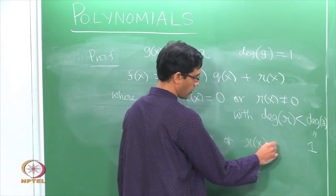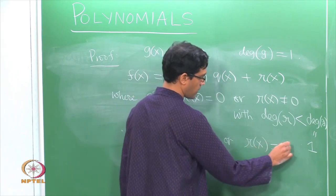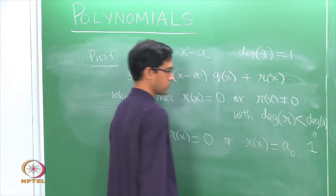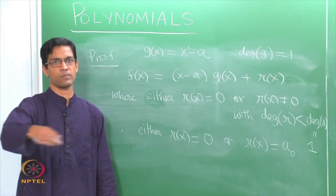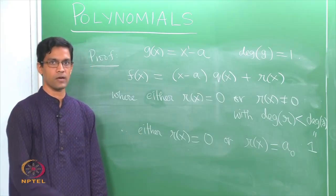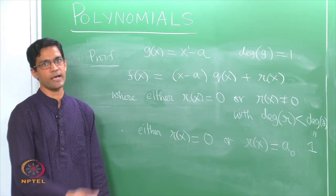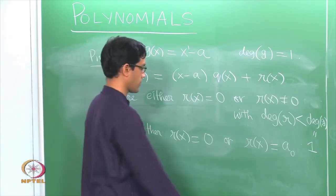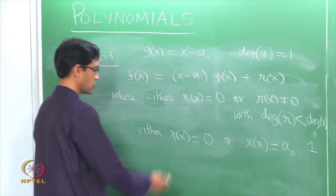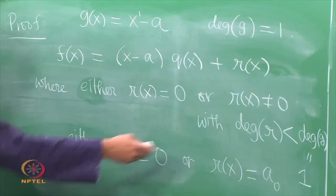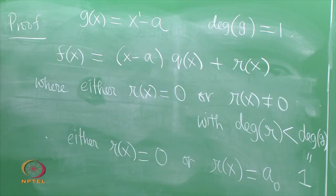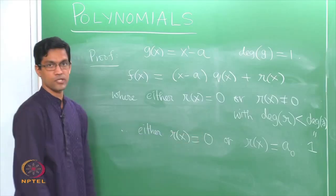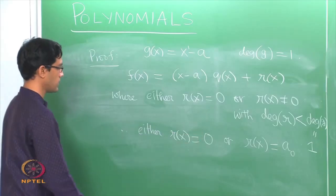What does a degree-0 polynomial look like? It only has a constant term A₀. So what we are concluding is that the remainder is a constant — either a 0 constant or possibly a nonzero constant. The claim is it is in fact 0; it cannot be a nonzero constant.